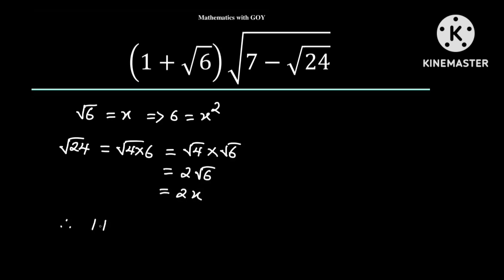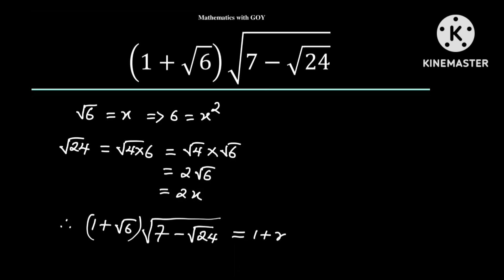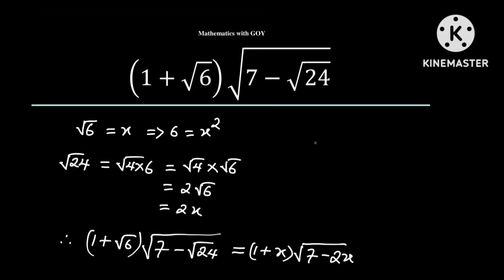Therefore, 1 plus the square root of 6 multiplied by the square root of 7 minus the square root of 24 is equal to 1 plus x multiplied by the square root of 7 minus 2x. But we know that 7 is equal to 6 plus 1, and this is equal to x squared plus 1, since x squared is equal to 6.